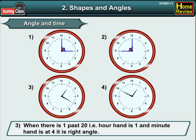Number three, when there is 20 past 1, that is, hour hand is at 1 and the minute hand is at 4. It is a right angle again.